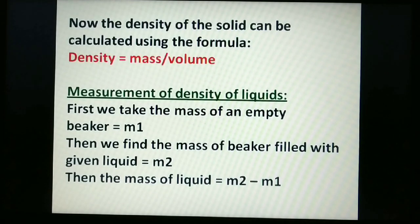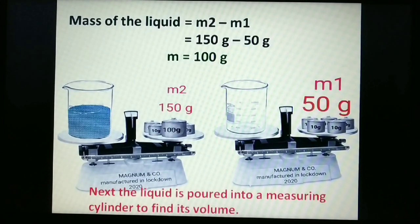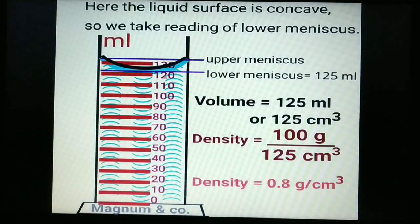For measurement of density of liquids: first, take the mass of an empty beaker (m1). Next, find the mass of the beaker filled with the liquid (m2). The mass of the liquid alone is m2 minus m1. For example, m1 = 50 g and m2 = 150 g, so mass of liquid = 150 − 50 = 100 grams.